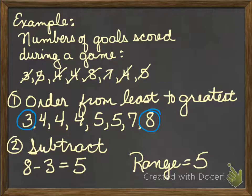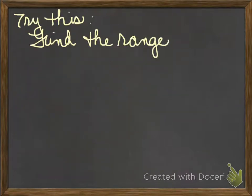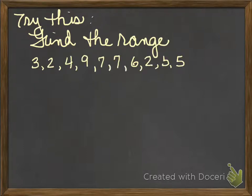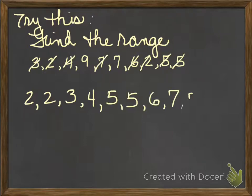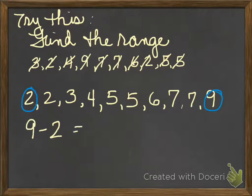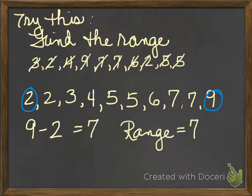High minus low — you try this one. I'll put my numbers in order. My high number is nine and my low number is two. Nine minus two is seven, so my range is seven.